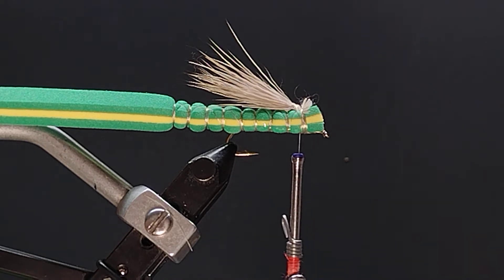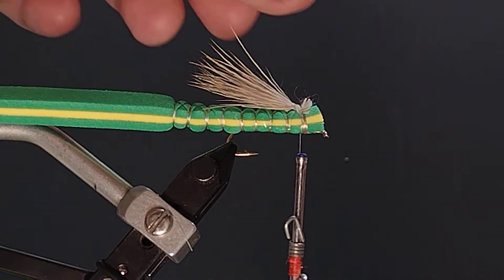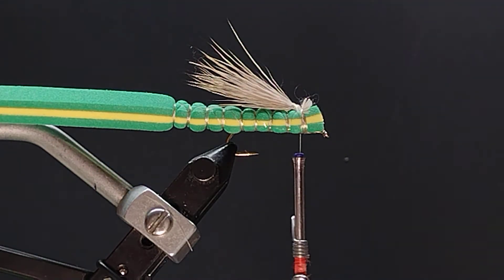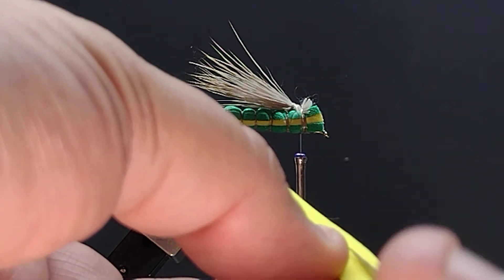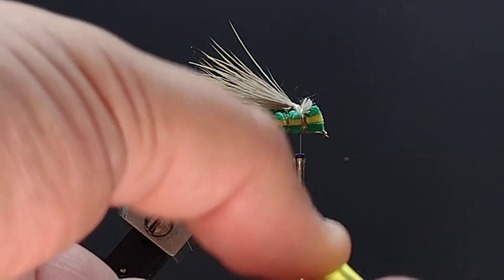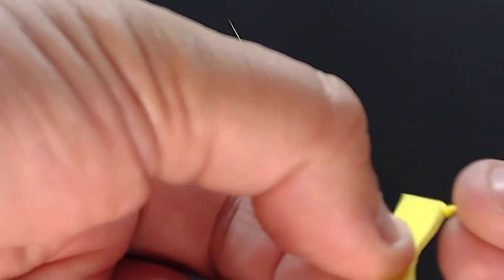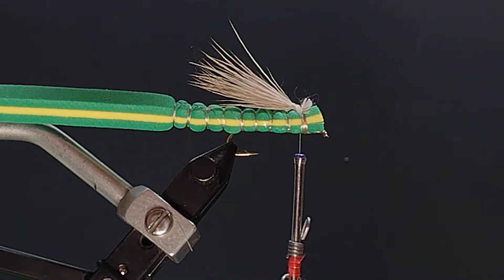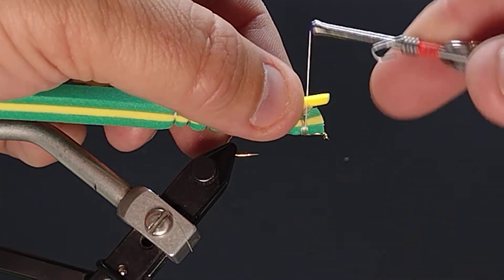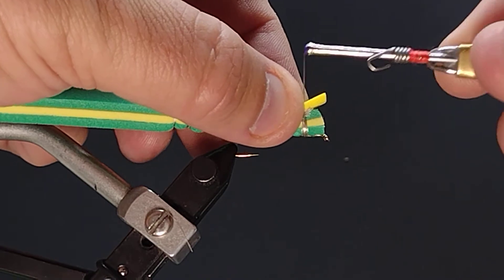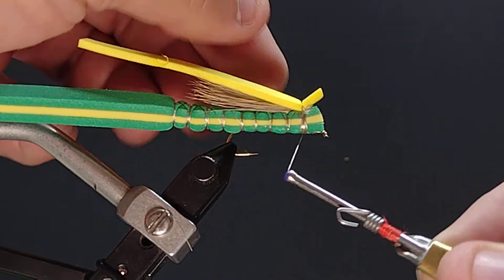Then I'm going to take some of my yellow. I'm going to trim this piece down a little bit. It's a little wide on me. I love foam because it's an inexpensive material. You can trim it to size. Put that on there.